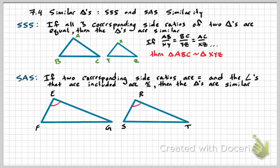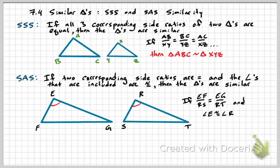So if we look at these two, I have angle E and angle R. We're going to be looking at these orange sides because those orange sides are where the angle is between those two. So EF corresponds to RS and EG corresponds to RT. If those two ratios are equal and the angle between them is equal — as in E is congruent to R — then the two triangles are similar.